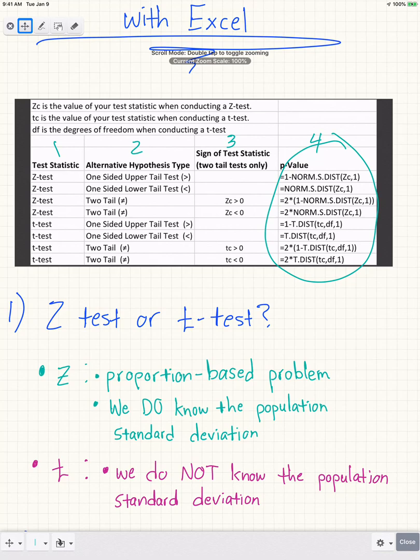If we're talking about a percent, like a part out of the whole instead of a mean or average number, then we go straight to a Z test. For mean-based problems, if we do know the population standard deviation, we use a Z test. If we do not know the population standard deviation, we use a T test.